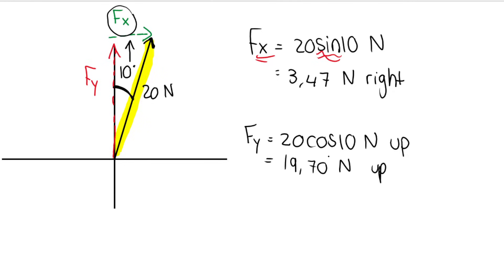Remember, I'm rounding off to two decimal places. My calculator said 19.696 and so on. I'm rounding off to two decimal places. The point that I'm trying to make here is that you cannot just learn that to get the x component, you use a certain trig ratio. It's all about where it is on the Cartesian plane, where the angle is given.